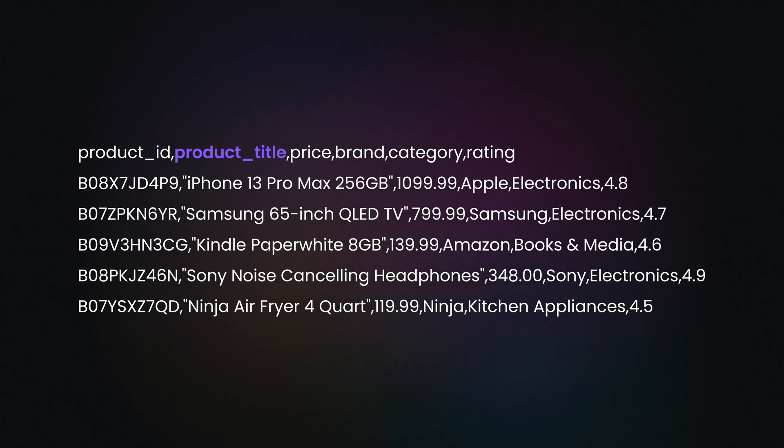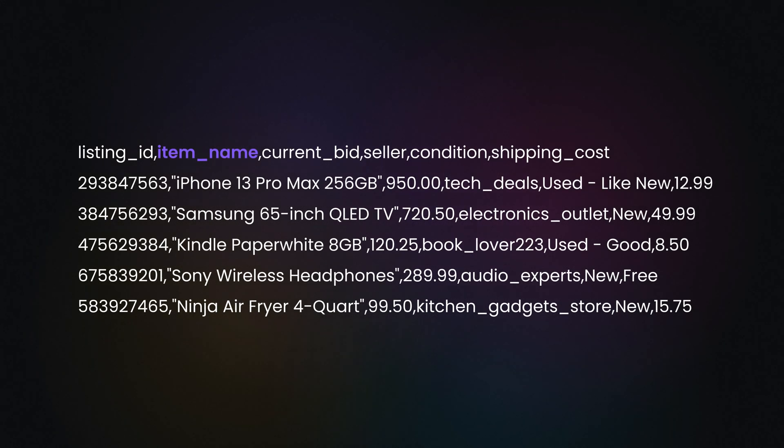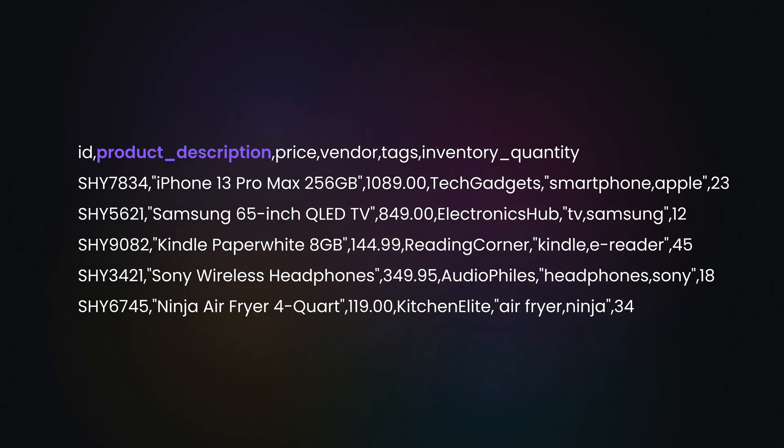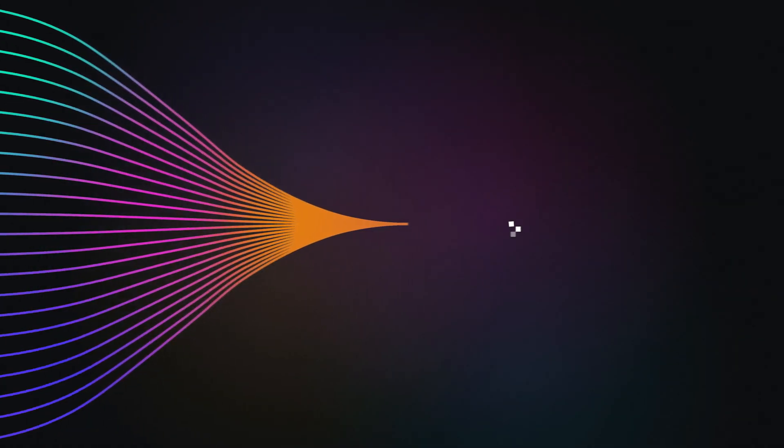You just scraped 10,000 product names from five different websites. Amazon calls it product title, eBay says item name, and Shopify uses product description. Does that sound familiar? What if I told you there's an automated way to standardize all datasets?